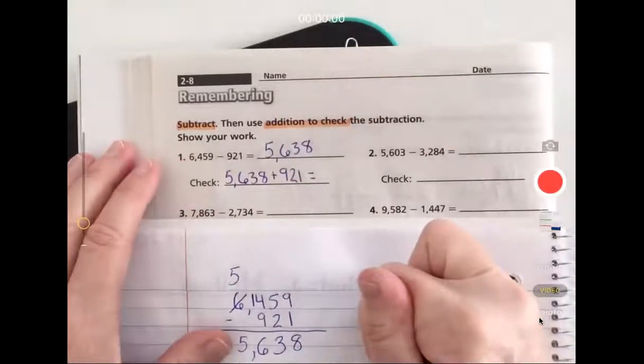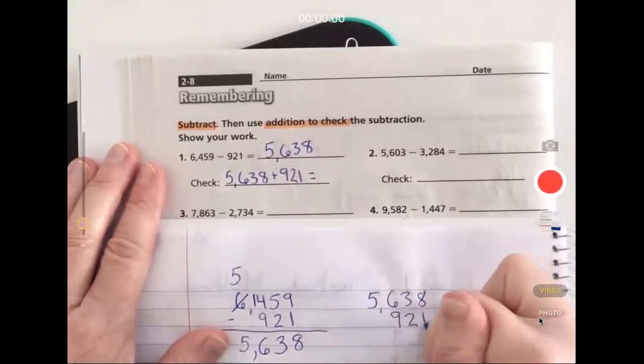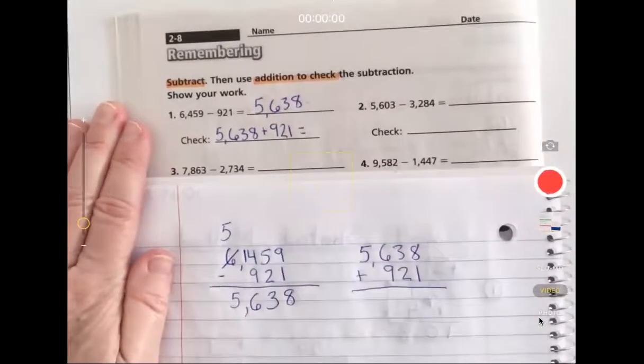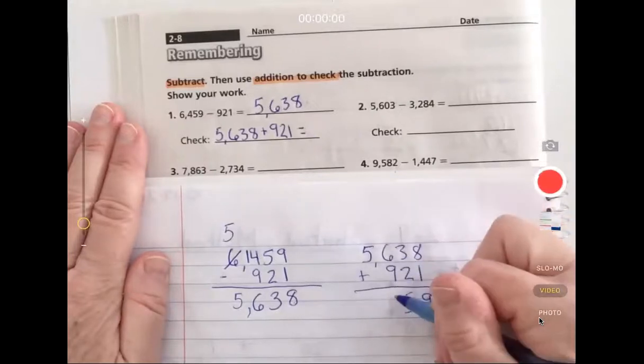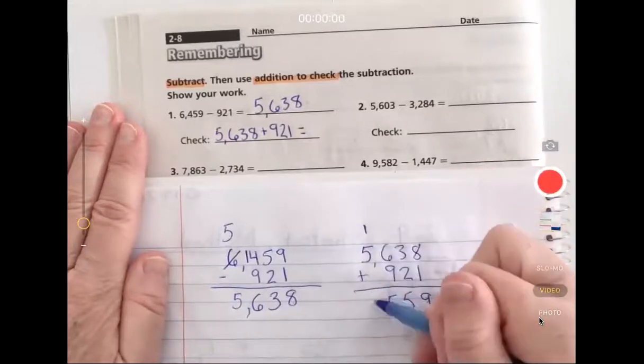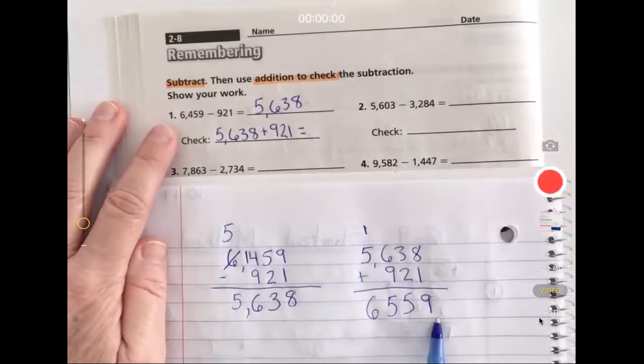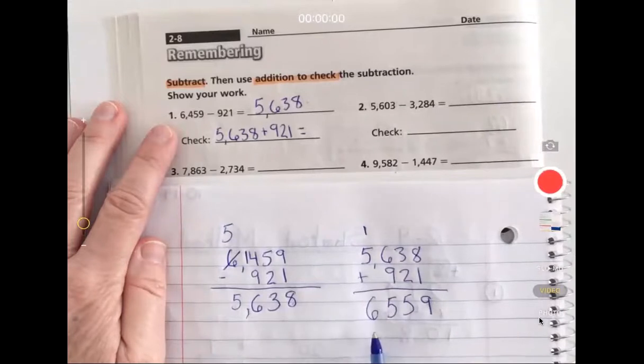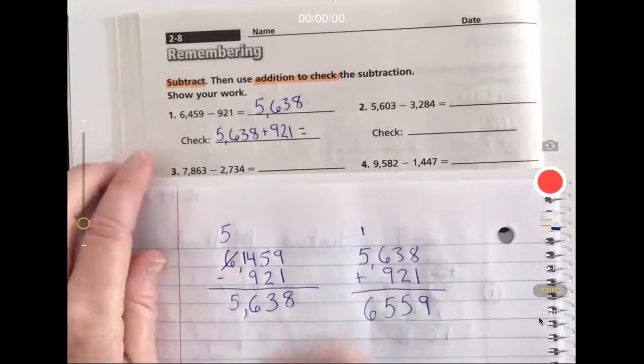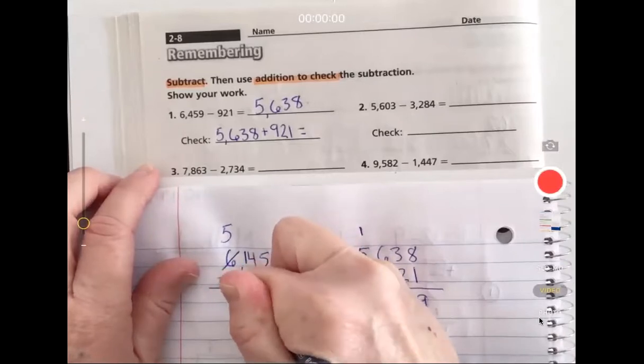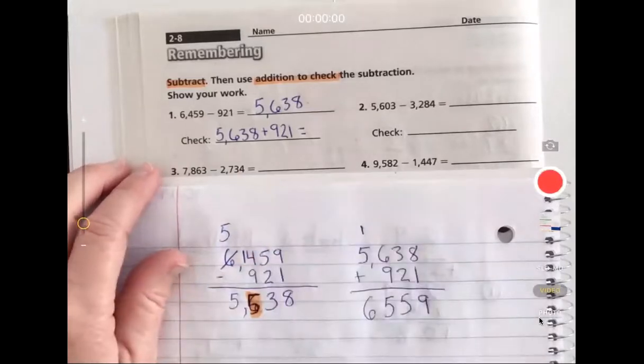Don't forget step two, my check. Remember if I've gone with subtraction this way, the inverse, the opposite direction, I can use addition. That means the difference plus the other number will get my total. Here I go: five thousand six hundred thirty-eight plus nine hundred twenty-one should equal that. Eight plus one is nine, three plus two is five, six plus nine is fifteen, I made a new group, and five plus one is six. Oh, something did not go well, did it?